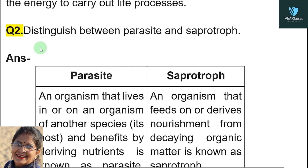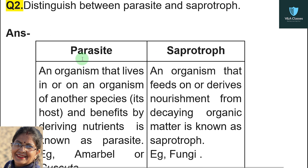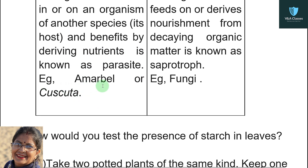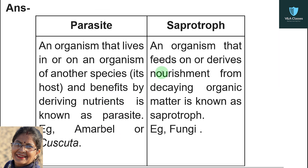Question number two: distinguish between parasite and saprotroph. Parasite: an organism that lives in or on an organism of another species and benefits by deriving nutrients is known as a parasite. Example: Amarvel or Cuscuta. Saprotroph: an organism that feeds on or derives nourishment from decaying organic matter is known as saprotrophs. Example: fungi.